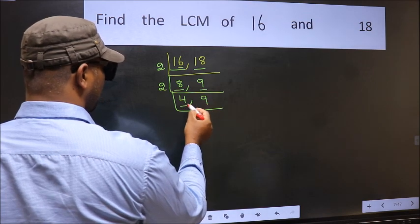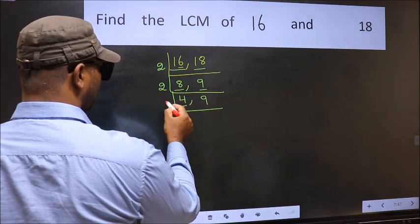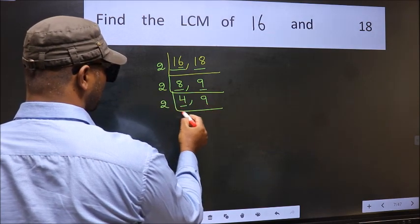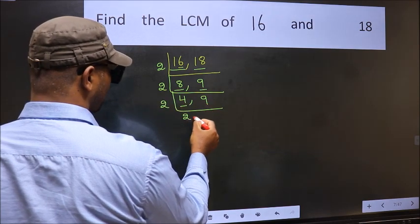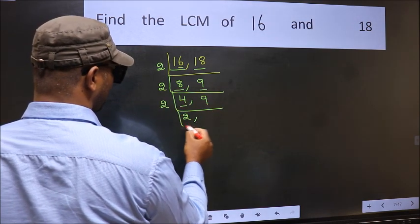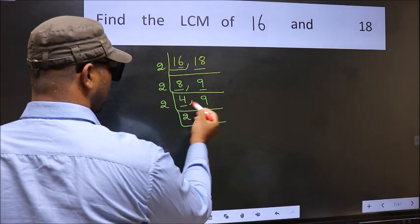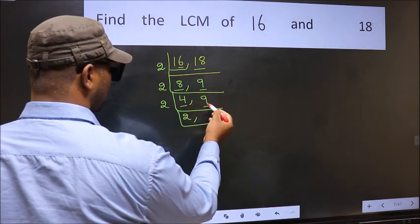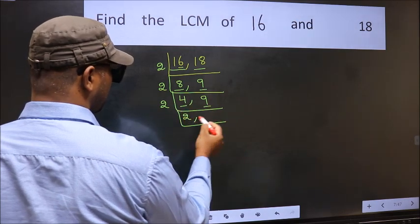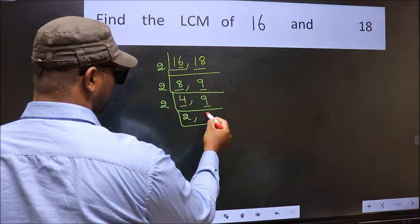Now here we have 4. 4 is 2 twos — 2 times 2 is 4. The other number 9 is not divisible by 2, so we write it down.